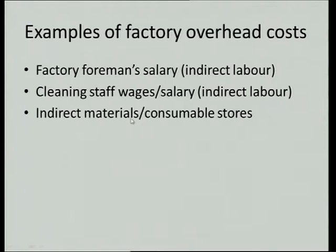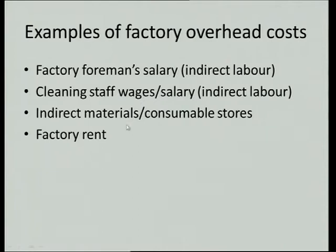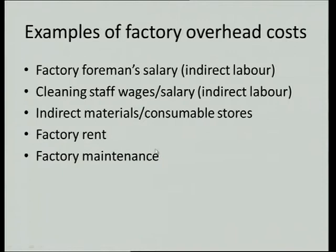Then indirect materials — these are all the things that we cannot quantify as part of the product; we cannot say that exact amount went into the product. Another word for indirect materials is consumable stores. Then factory rent is also a factory overhead cost — it's the rent you pay for the portion of the building where production takes place. Factory maintenance — if they're maintaining the machines, that is also a factory overhead cost.